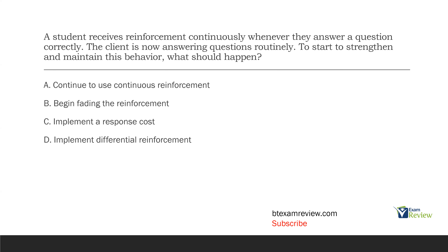Option B: begin fading the reinforcement. Yes — after you've used continuous reinforcement to teach a skill, the next step is you start fading out that reinforcement. Option C: implement a response cost. A response cost is just a punishment procedure. There's no indication we need a punishment procedure here. The client is doing quite well, so we need to continue reinforcing — we just need to fade out the reinforcement. Option D: implement differential reinforcement. We don't need an extinction procedure quite yet. We're just focused on this one skill and now we want to strengthen and maintain it. In order to do that, we've got to fade out from continuous reinforcement to other types of schedules of reinforcement.